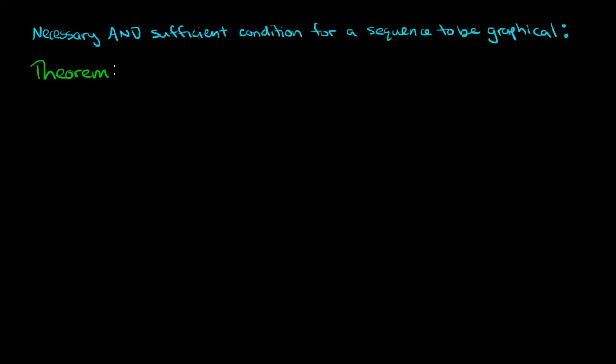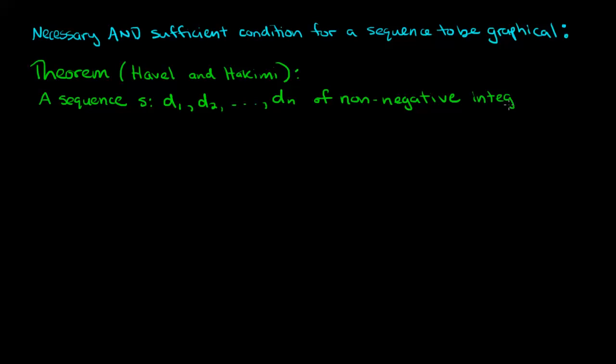So now for the exciting part I'll show you a necessary and sufficient condition for a sequence to be graphical. This is a theorem and it was found independently by Havel and Hakimi in the 50s and 60s. So this is referred to as the Havel-Hakimi theorem.